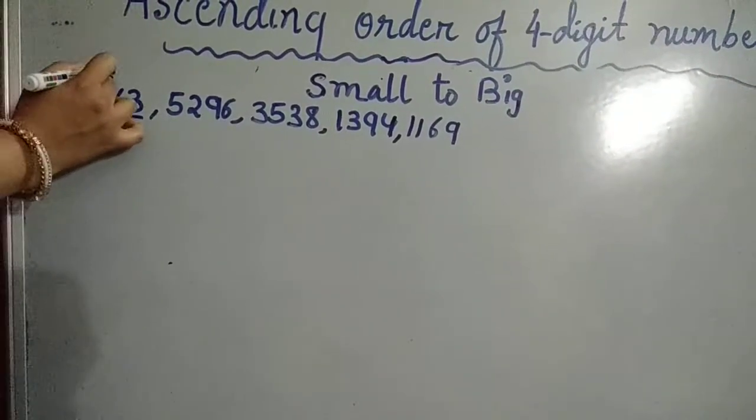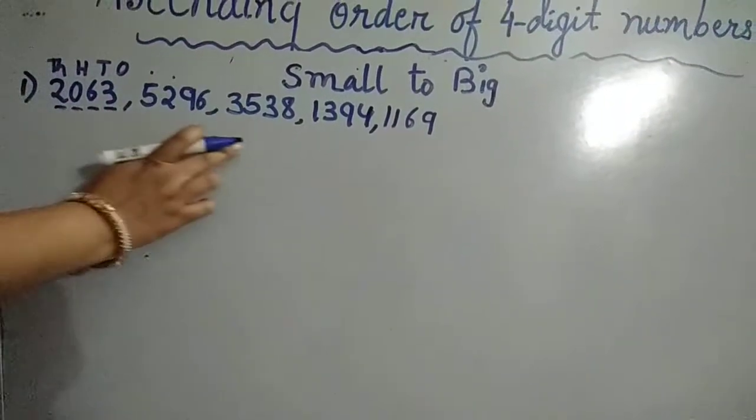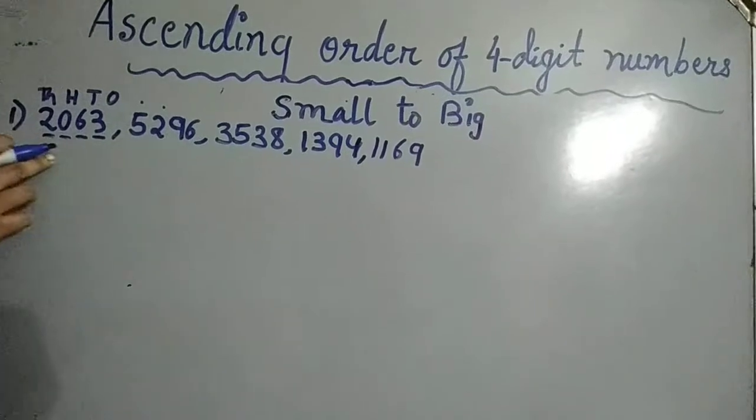Thousand place, hundred place, tens, ones. All five numbers have four digits.